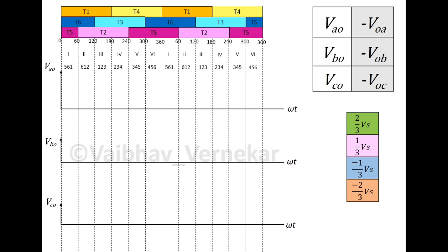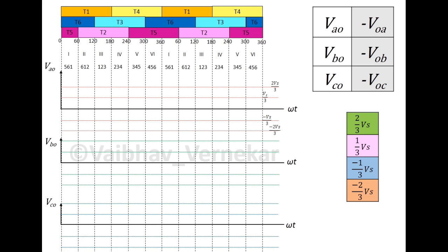We need to plot the values on the graph. So divide all the axes into 4 sections: 2Vs by 3, VS by 3, minus VS by 3 and minus 2Vs by 3. Do the same for the other two axes.